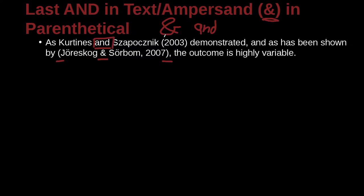On the first example, the parentheses contain just the year, so here we use A-N-D. The second time, however, the authors are inside the parentheses with a comma — you see the comma there. So this is the author list, comma, and we have an ampersand.